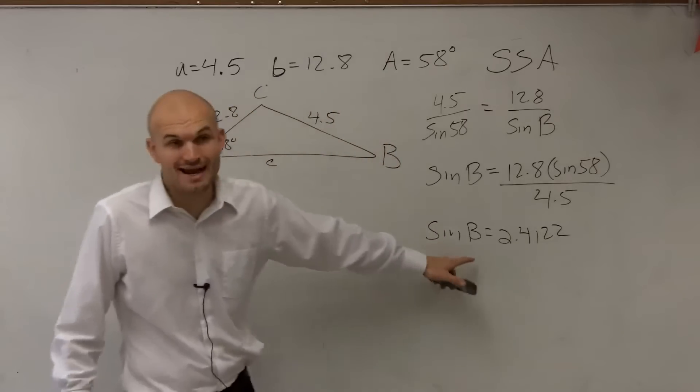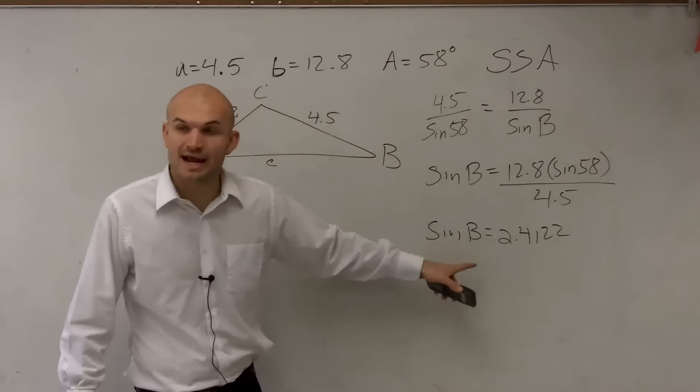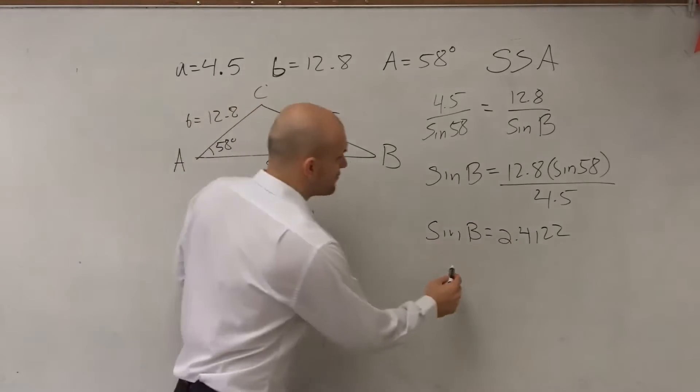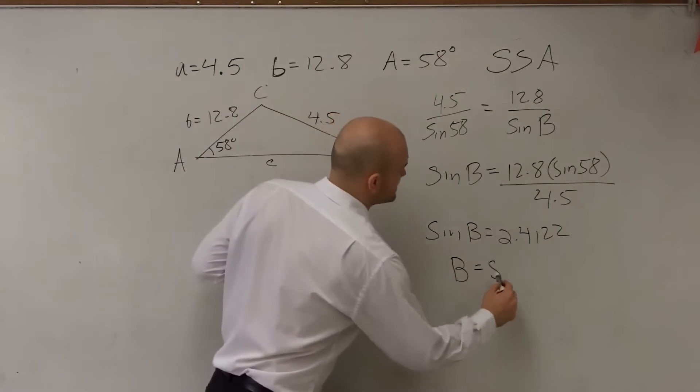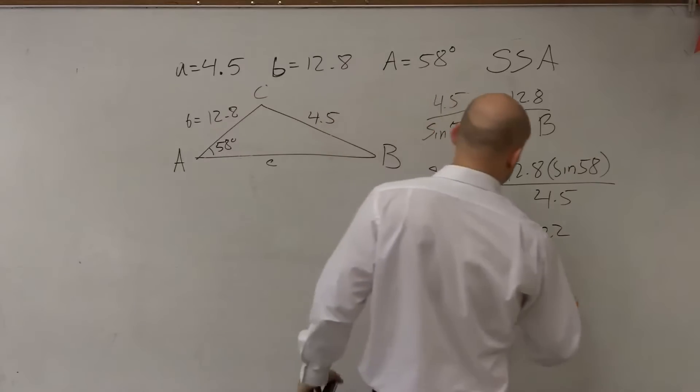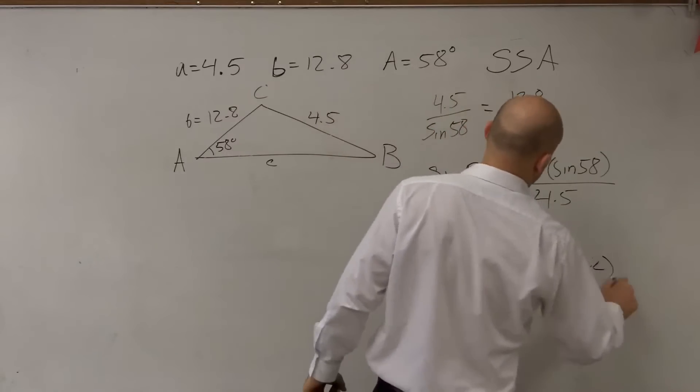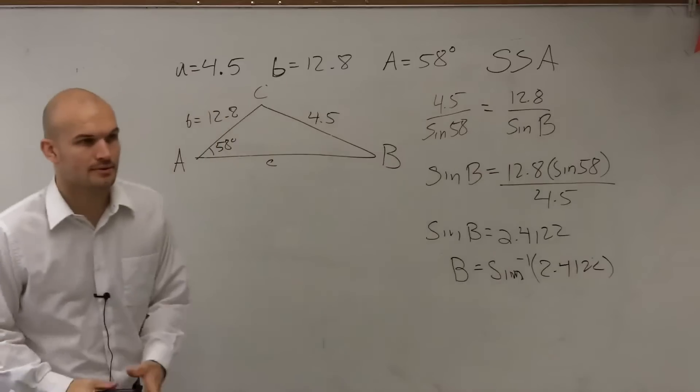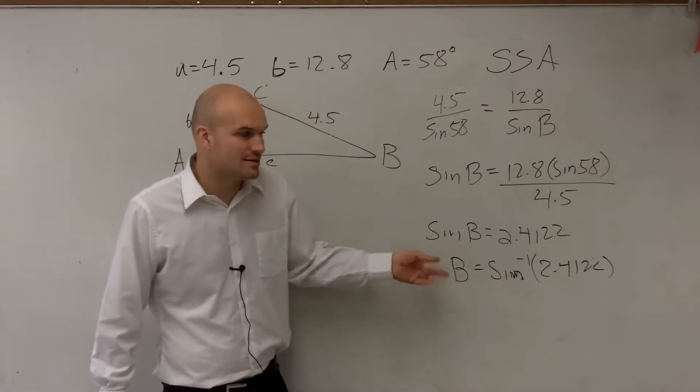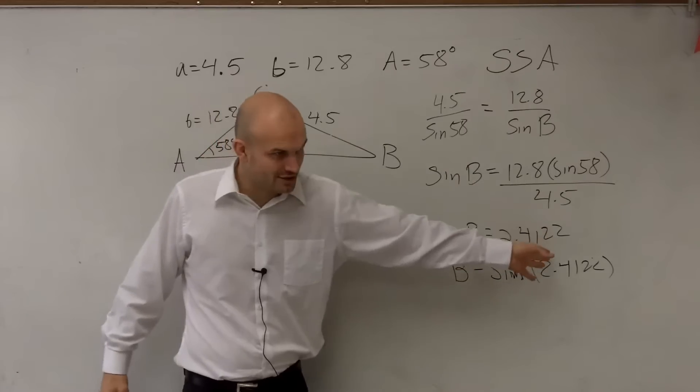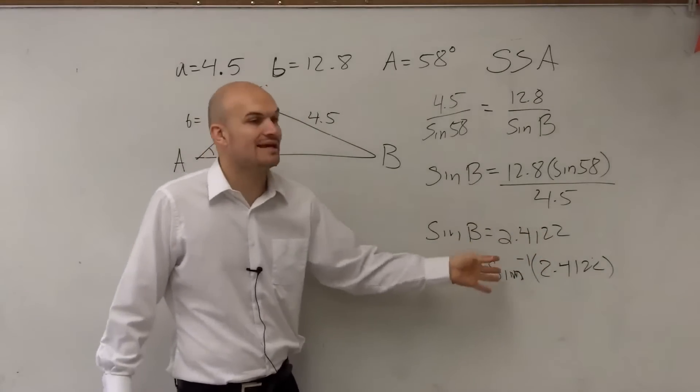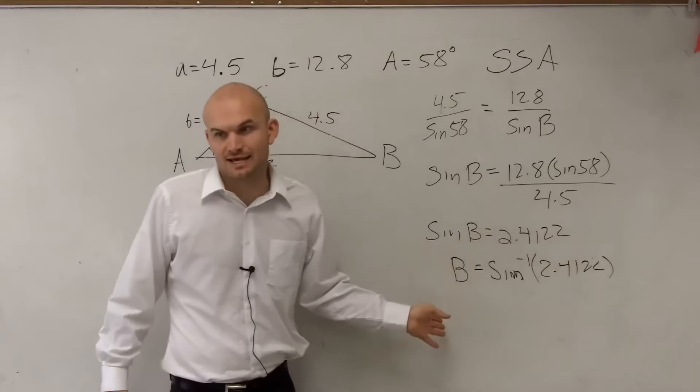So now to find actually our angle, remember it says the sine of your angle is equal to this decimal which represents a ratio. So therefore to find B, I need to say sine inverse of 2.4122. Because we need to find the angle. We need to find what B is. So the sine of your angle equals your ratio, but we want to find what is the angle. So you have to do the inverse sine of your ratio to find the angle.